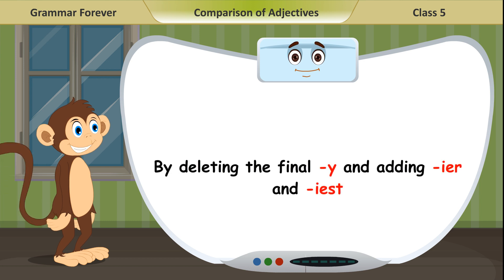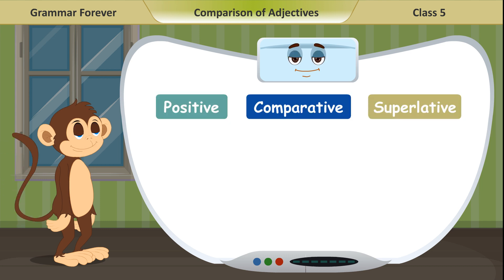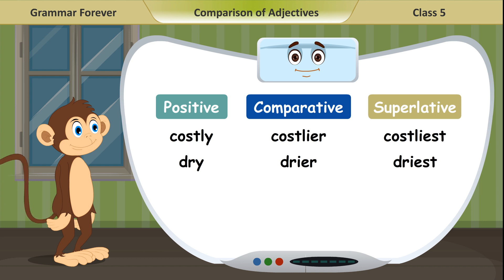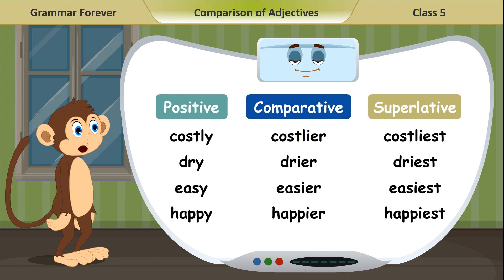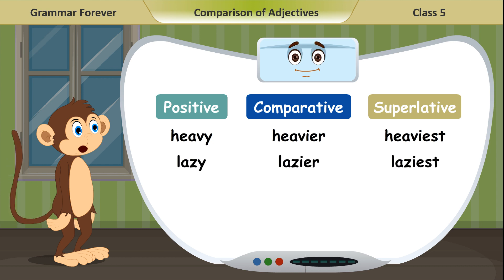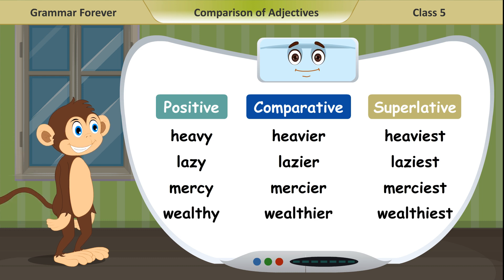By deleting the final Y and adding -IER and -IEST: Costly, costlier, costliest. Dry, drier, driest. Easy, easier, easiest. Happy, happier, happiest. Heavy, heavier, heaviest. Lazy, lazier, laziest. Merciful, more merciful, most merciful. Wealthy, wealthier, wealthiest.